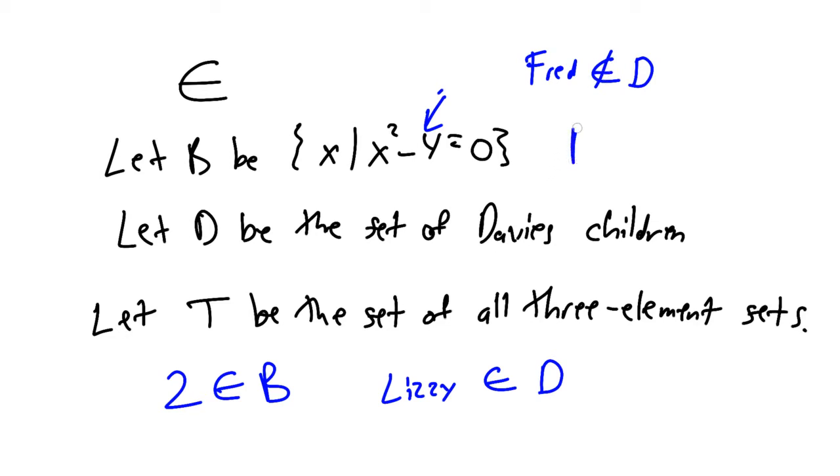I'm going to say that B ∉ T, but that D ∈ T. These are all true statements. Again, D is a set with three members. Hopefully you know that by now. My kids come up in a lot of examples, so memorize that fact if you haven't done it already.